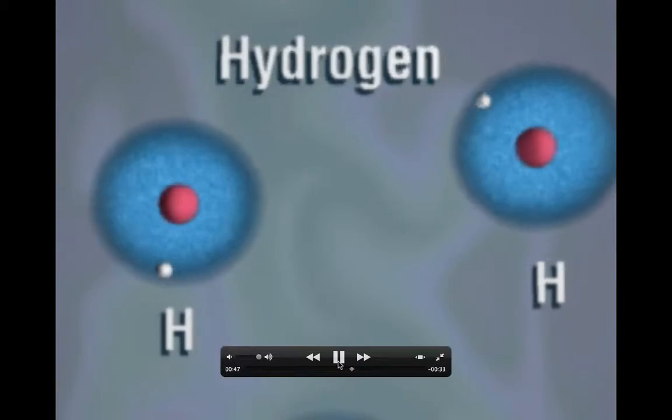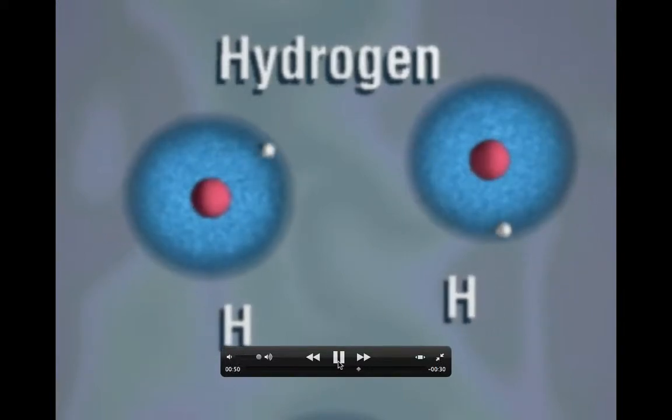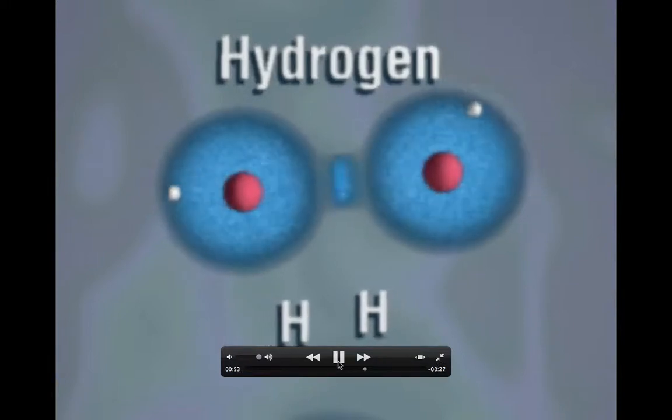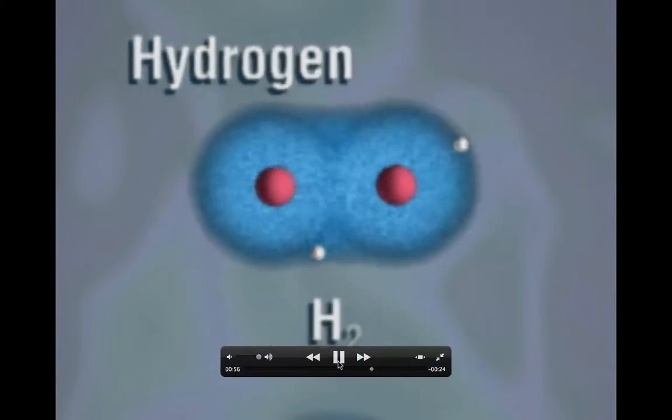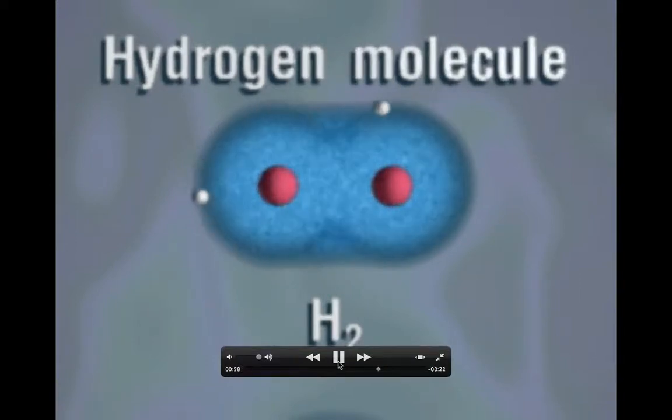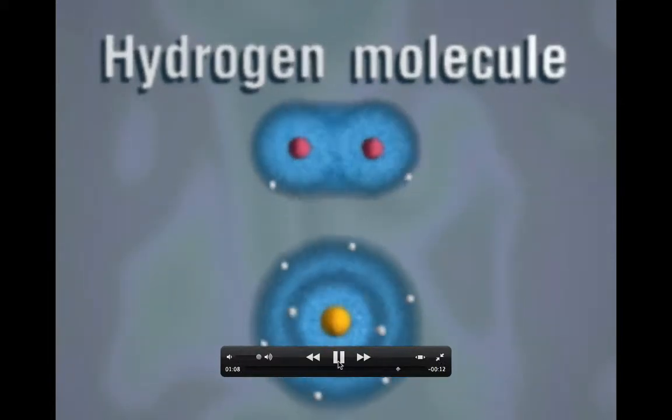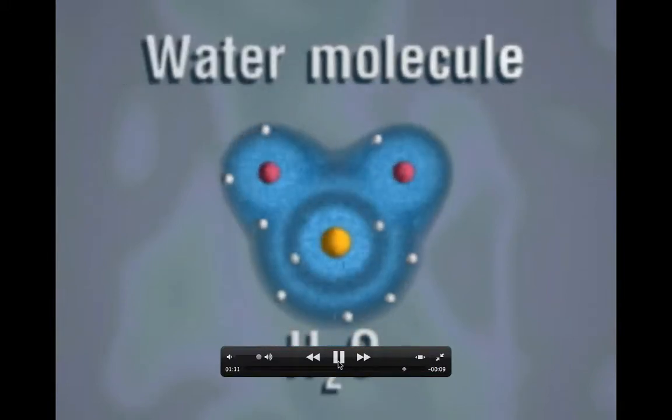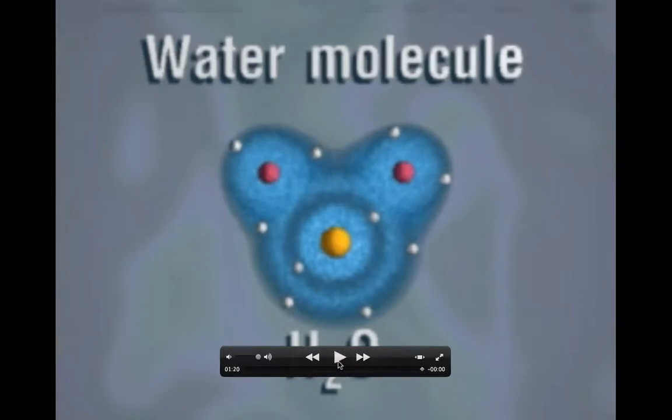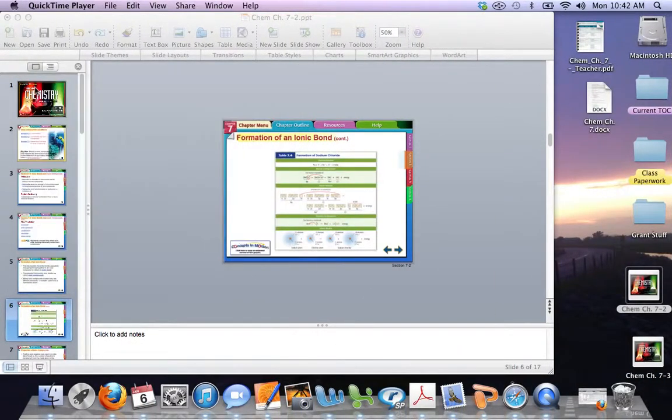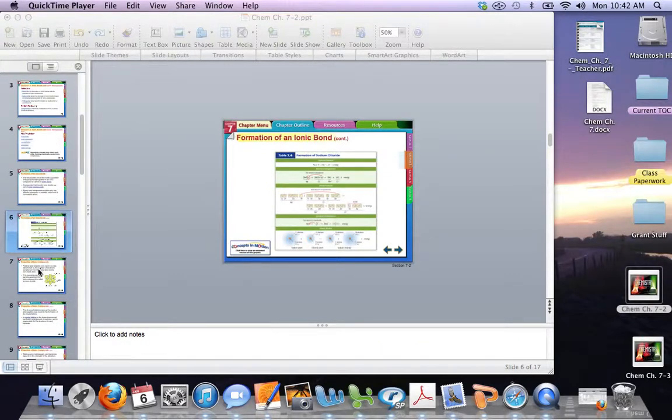Sometimes atoms combine by sharing electrons to form covalent bonds. Hydrogen gas exists in nature as diatomic molecules. Two hydrogen atoms share electrons with each other. The electrons move around the nuclei of both atoms. When two hydrogens share electrons with oxygen, they form covalent bonds to produce a molecule of water. Each hydrogen atom shares one electron with the single oxygen atom. The last part of that was covalent bonding and we will do that in another chapter. Let's go back to our PowerPoint.